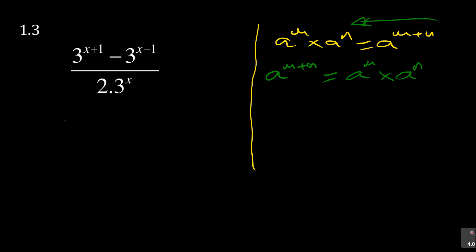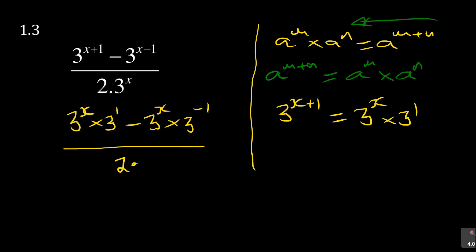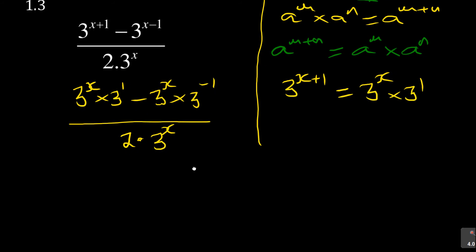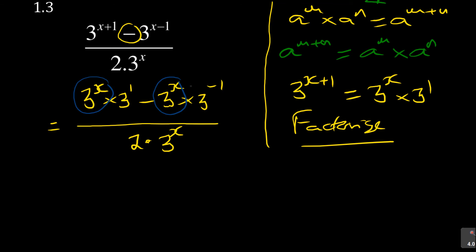Applying that splitting: 3 to the power x plus 1 becomes 3 to the power x times 3 to the power 1, and 3 to the power x minus 1 becomes 3 to the power x times 3 to the power negative 1. So the numerator is 3 to the power x times 3 minus 3 to the power x times 3 to the power negative 1, all over 2 times 3 to the power x. Whenever you see addition or subtraction like this, you know you're going to factorize.